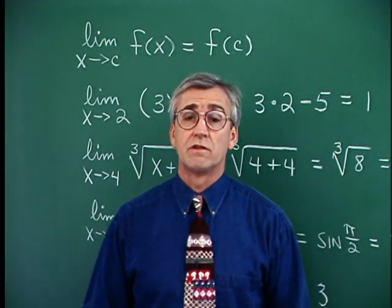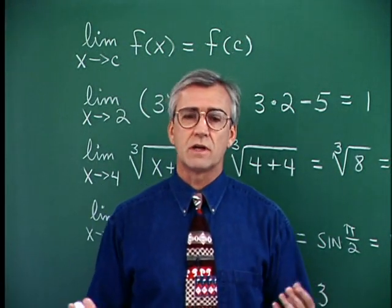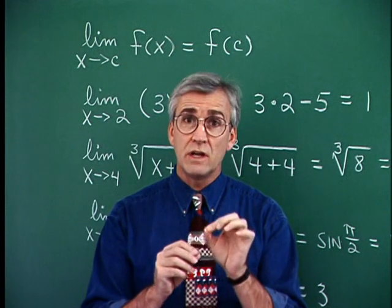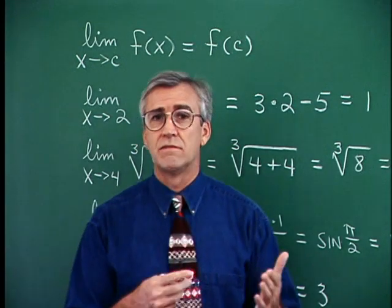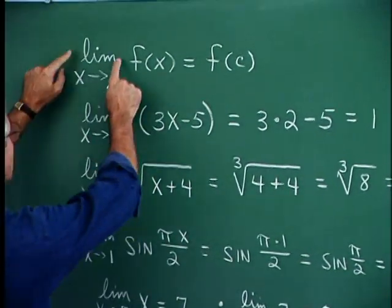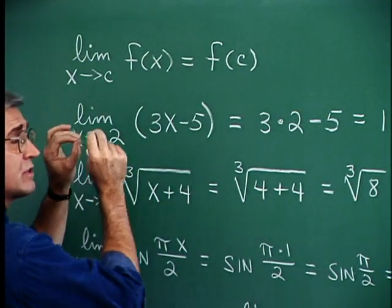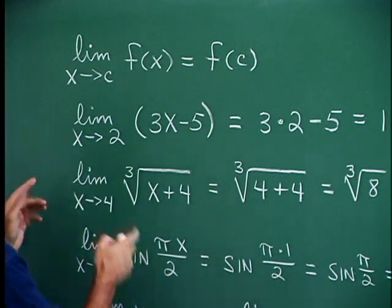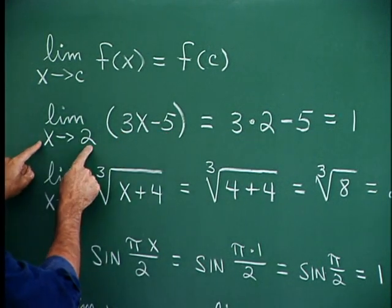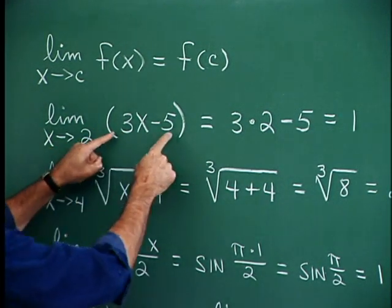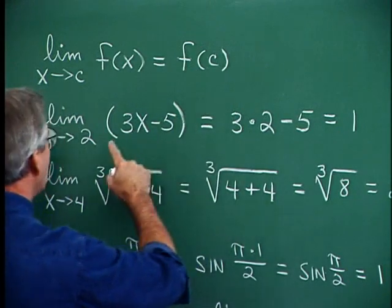In this section we're going to look further at ways to evaluate limits. A lot of what we're going to talk about is really easy because often functions are continuous at the target point — all it is is taking f of the target point. The limit as x approaches c is just f of c if the function is continuous there. For example, the limit of this expression as x approaches 2: replace x with 2 and we have 6 minus 5, or 1. So the limit is 1.